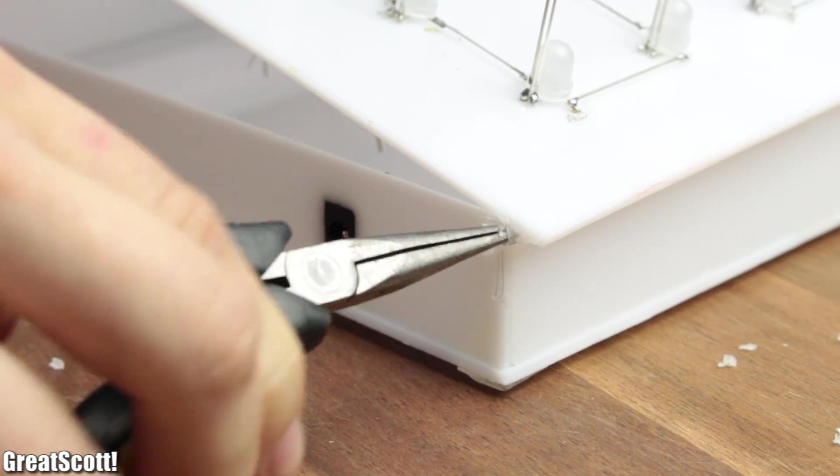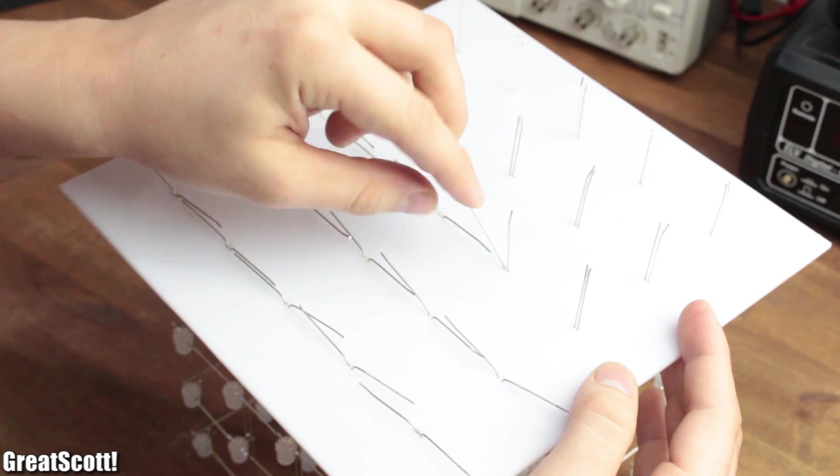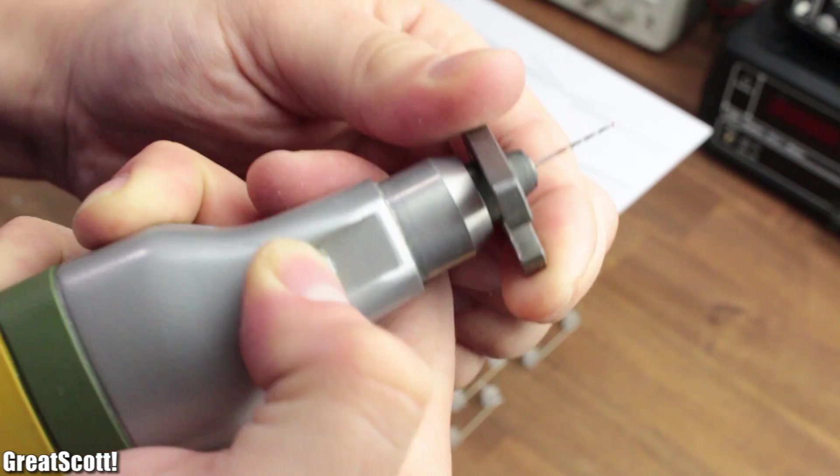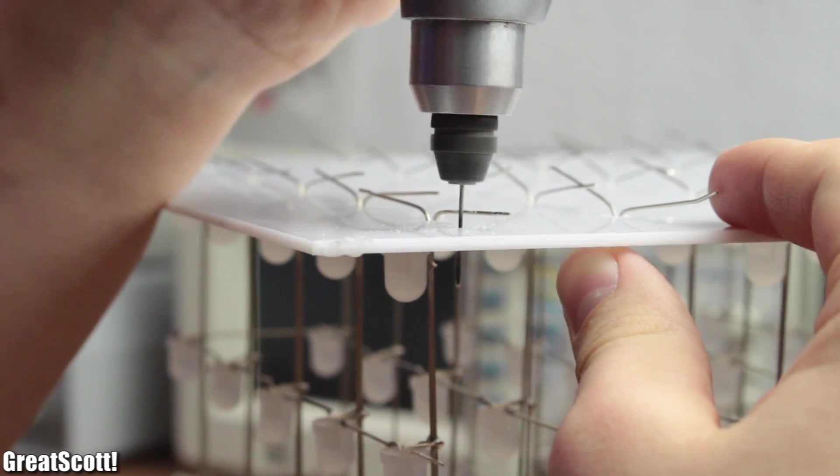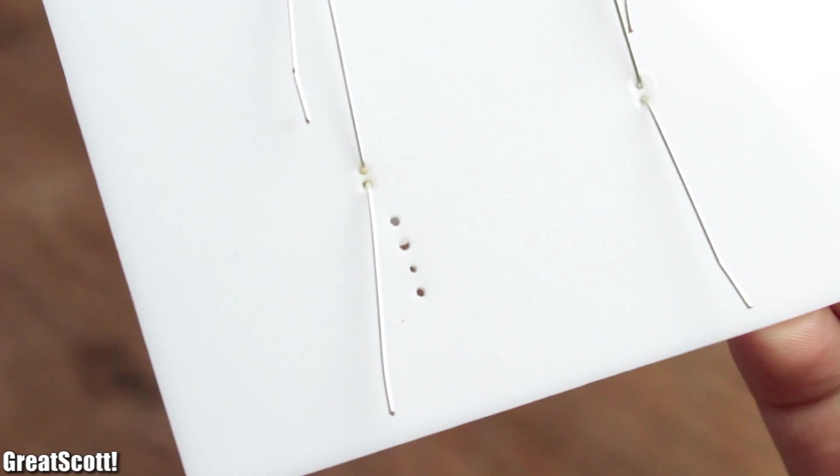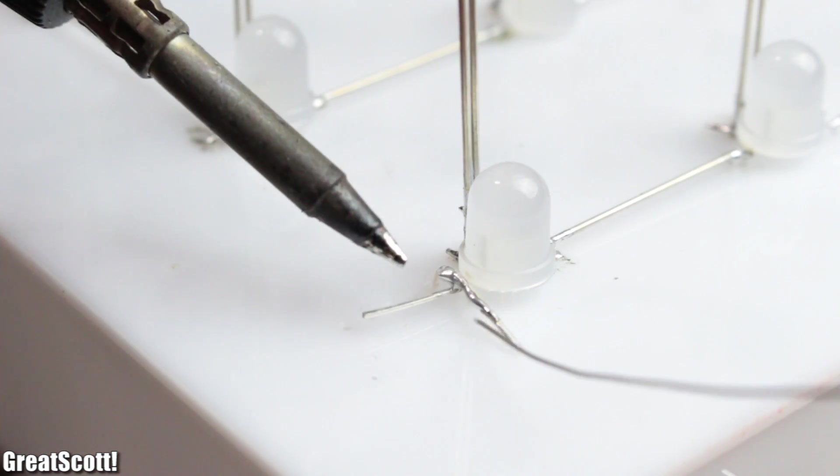Afterwards I removed my hot glue seal and flipped the cube upside down. Then I bent the power copper wires and used a 0.8 millimeter drill bit to create 5 holes near the first data in pins and 4 holes next to the last data out pins.